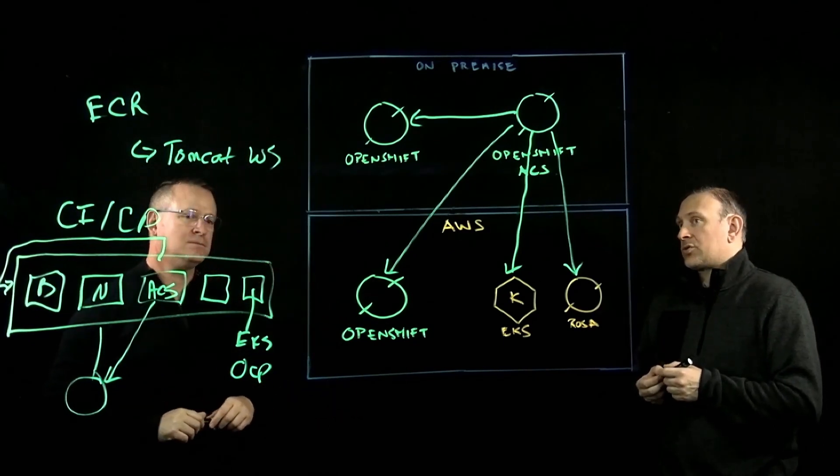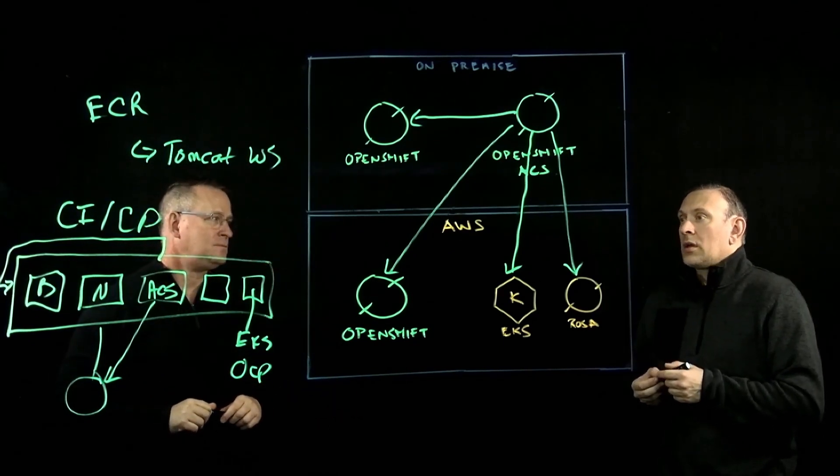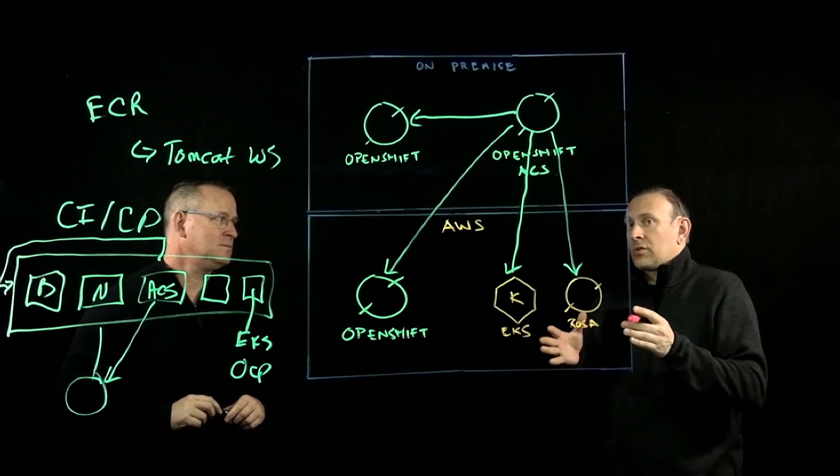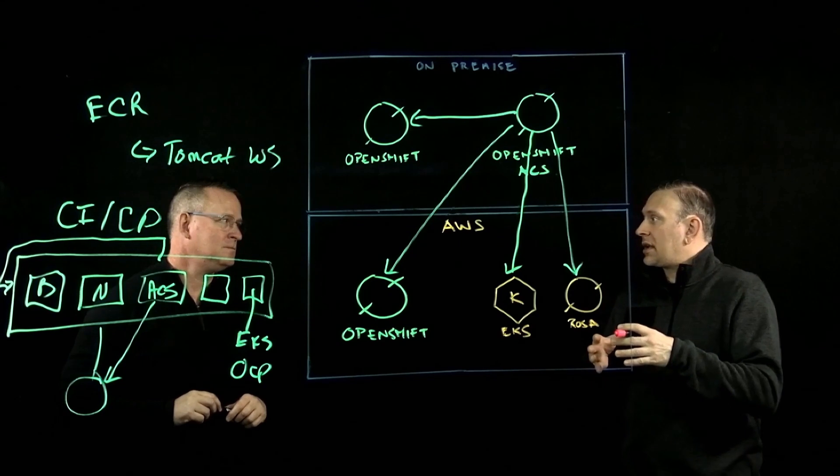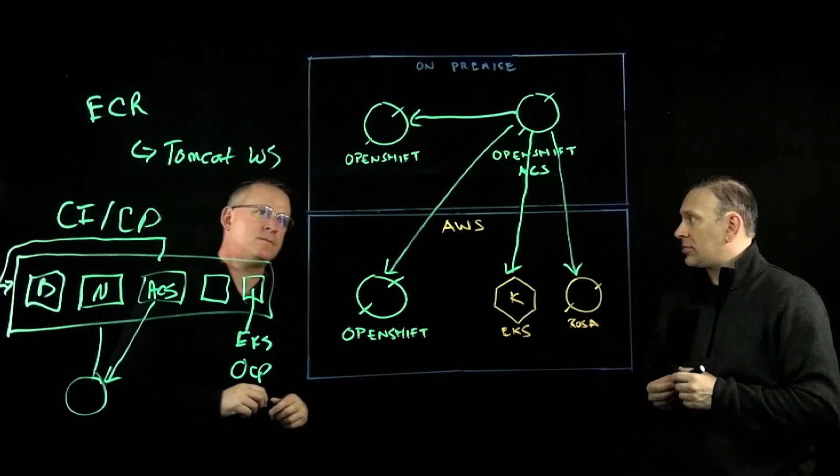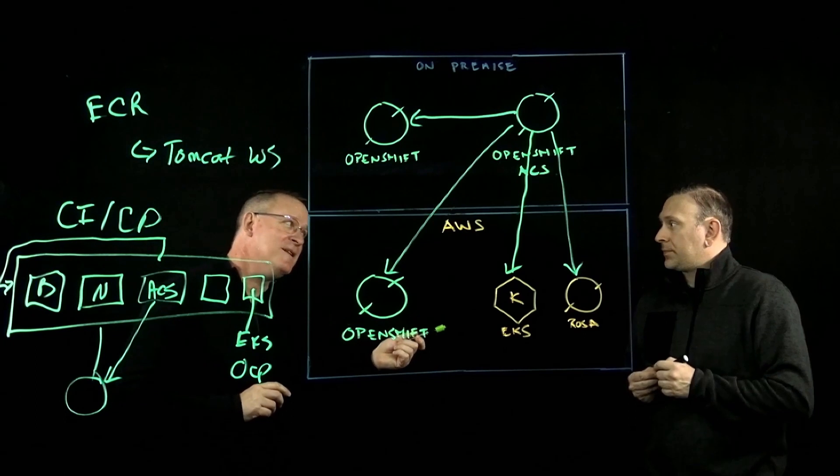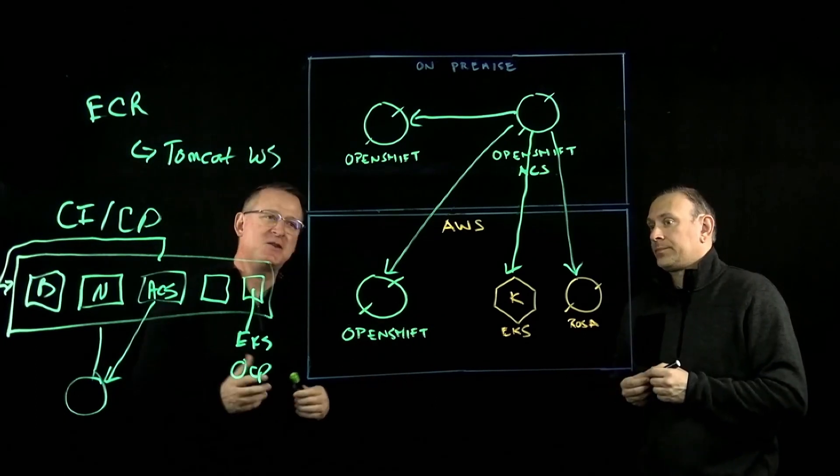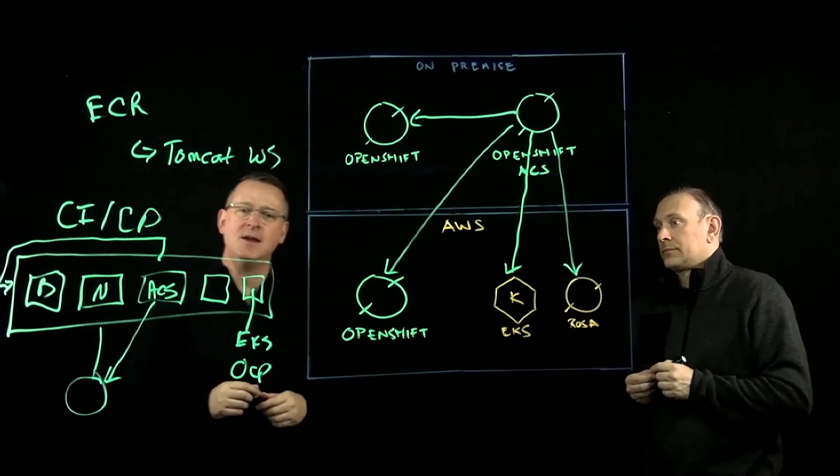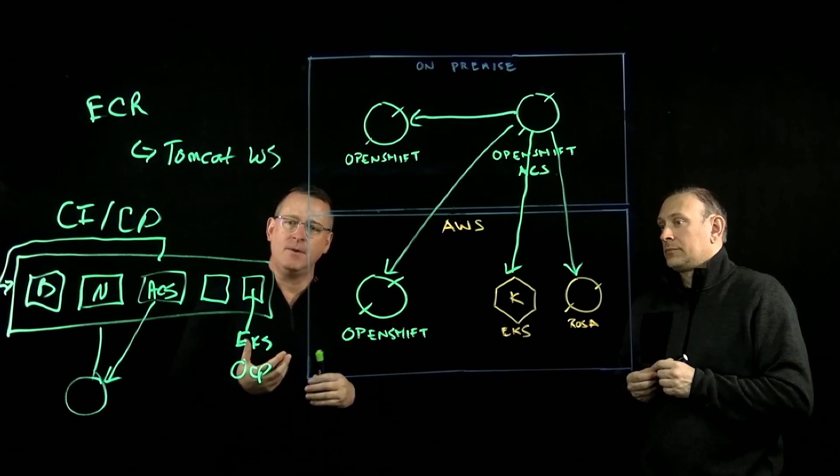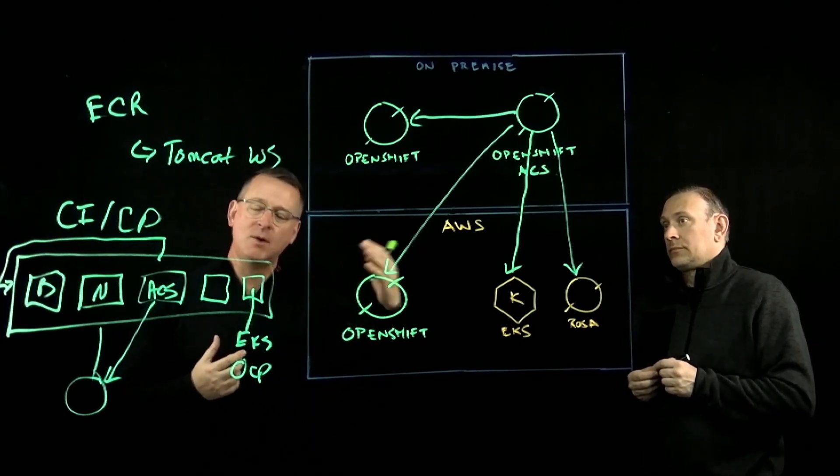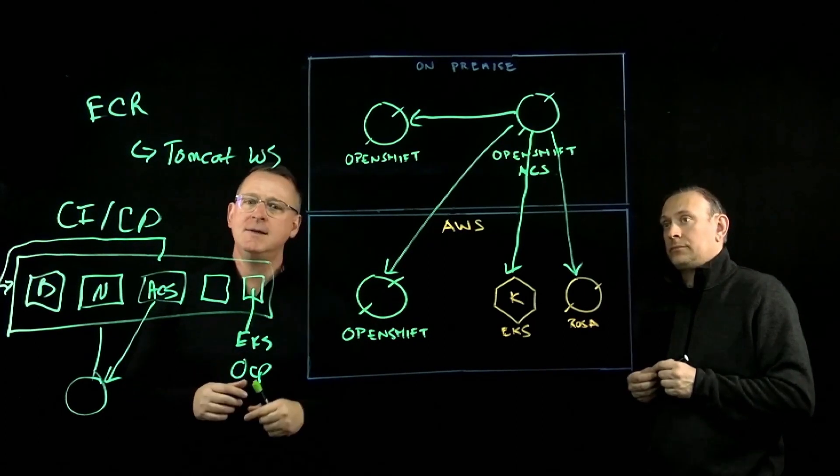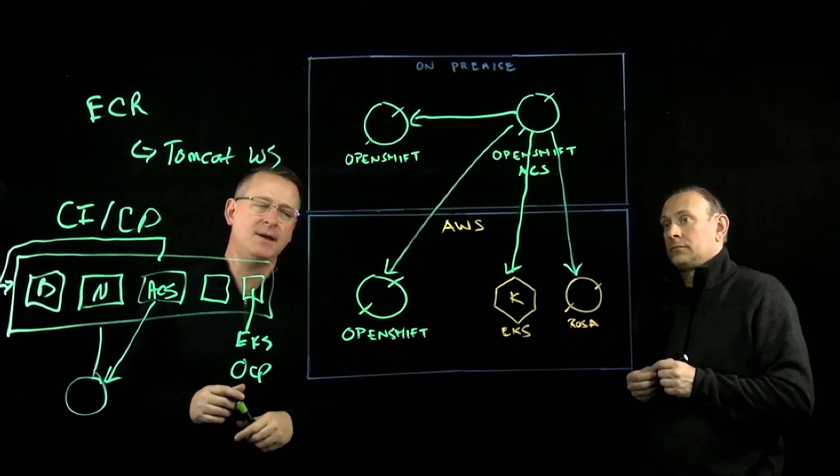That's extremely powerful. So if a customer is looking at consuming ACS is, is that prepackaged with OpenShift or is that kind of an add on or how would they actually consume ACS? That's a great question because nothing's free. So yeah, you have to purchase the ACS operator from Red Hat. And once you have that ACS subscription, you can then deploy it inside of OpenShift and you can leverage it to do the things we described.